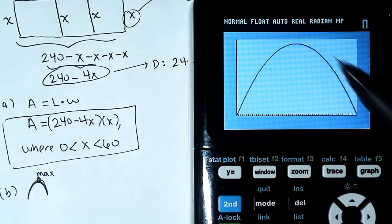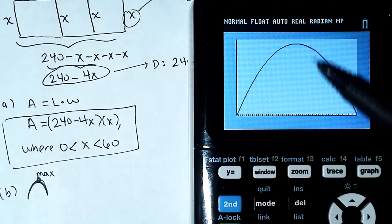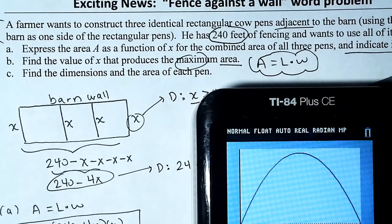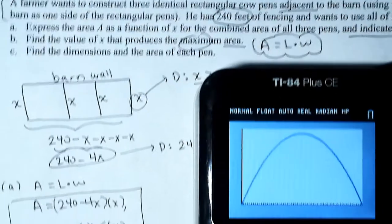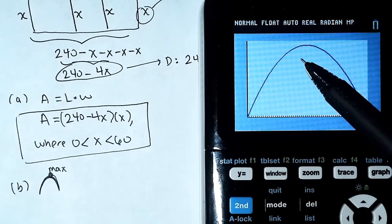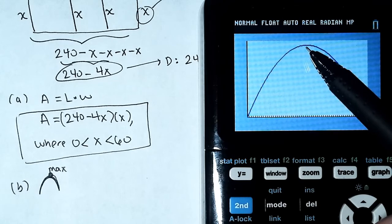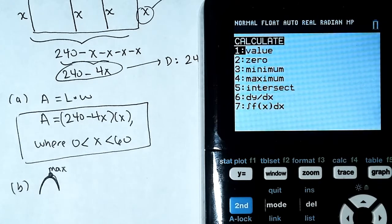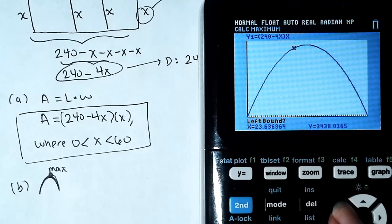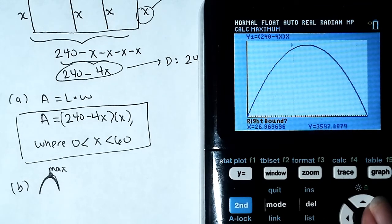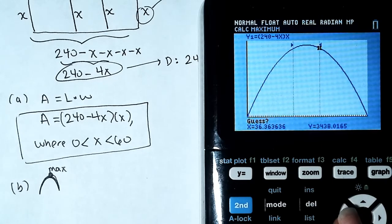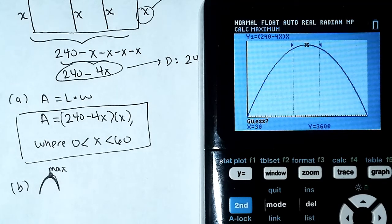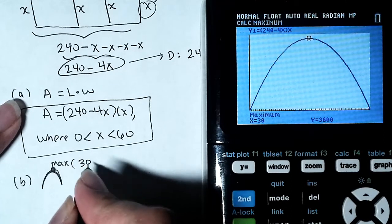After adjusting the window, we hit Graph and can now see the maximum. To find the exact maximum: Second > Calc > Maximum. Place the left bound cursor to the left of the peak, enter; right bound to the right, enter; then guess. The calculator returns the maximum.